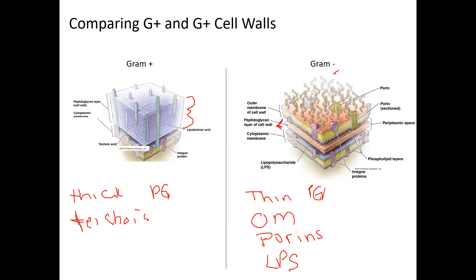Make sure that you can differentiate between gram-positive and gram-negative cell walls. You definitely need to know what makes up the gram-positive cell wall and what makes up the gram-negative cell wall, and why that's important. I could ask you to describe the difference or label the difference. You could have a multi-select question like 'which of the following are present in a gram-positive cell wall.' So definitely know the components of each and why that matters.